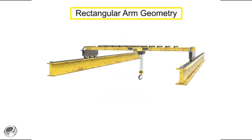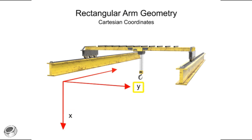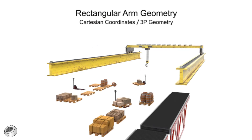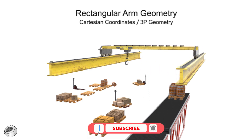Robots with rectangular arm geometry use Cartesian coordinates and move linearly along each of the X, Y, and Z axes. This type of movement is also called 3P geometry, where the P stands for prismatic or linear motion. This type of geometry is most commonly used with pick-and-place or large overhead-mounted robots.